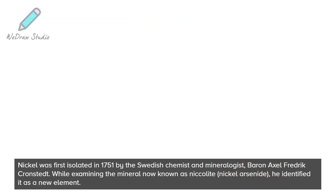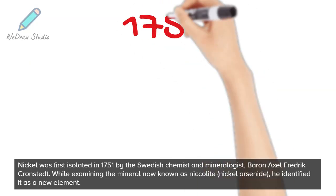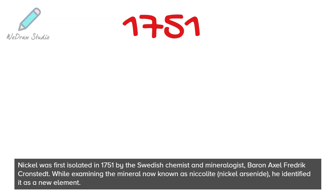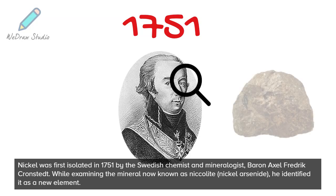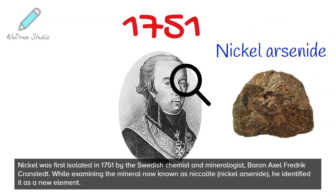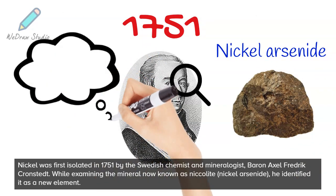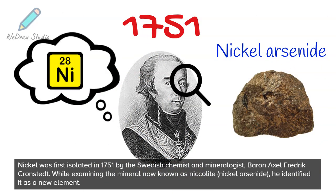Nickel was first isolated in 1751 by the Swedish chemist and mineralogist Baron Axel Frederick Kronstadt. While examining the mineral now known as nickelite — nickel arsenide — he identified it as a new element.